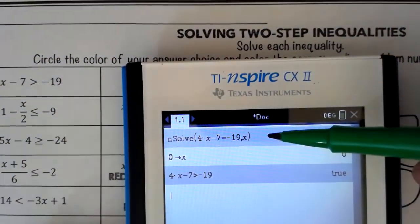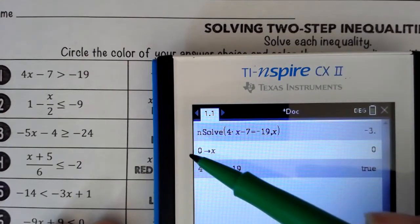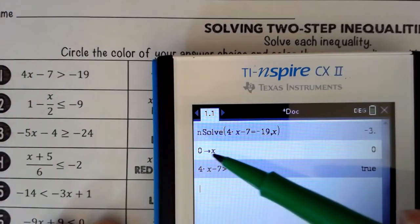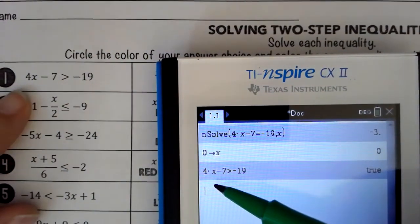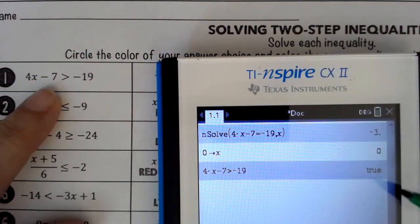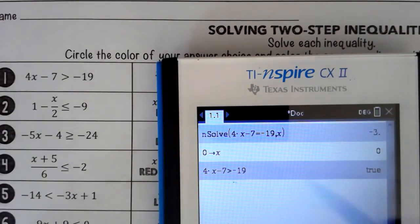So again, those steps are: use insolve to find your number, set X to be 0 by saying 0 control var X, and then type in your equation to find out if it's true or false. If it's true, keep the sign. If it's false, flip the sign.